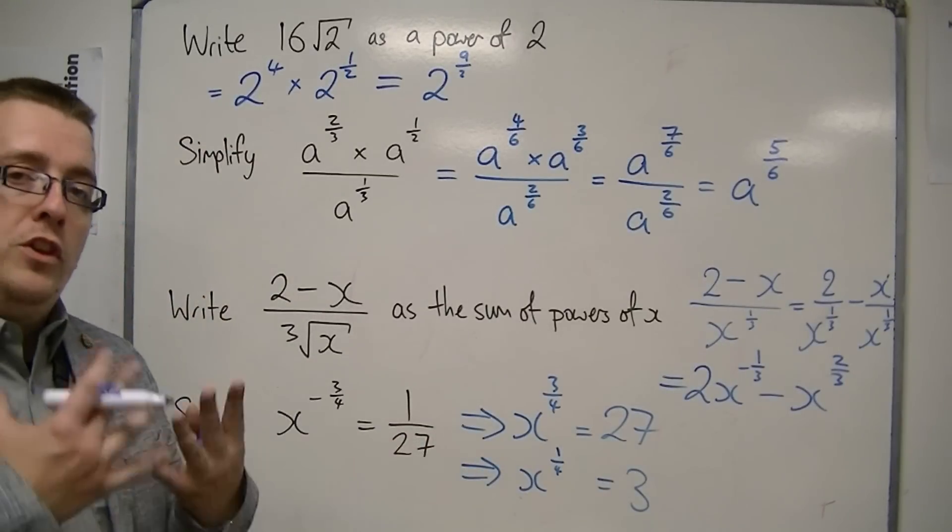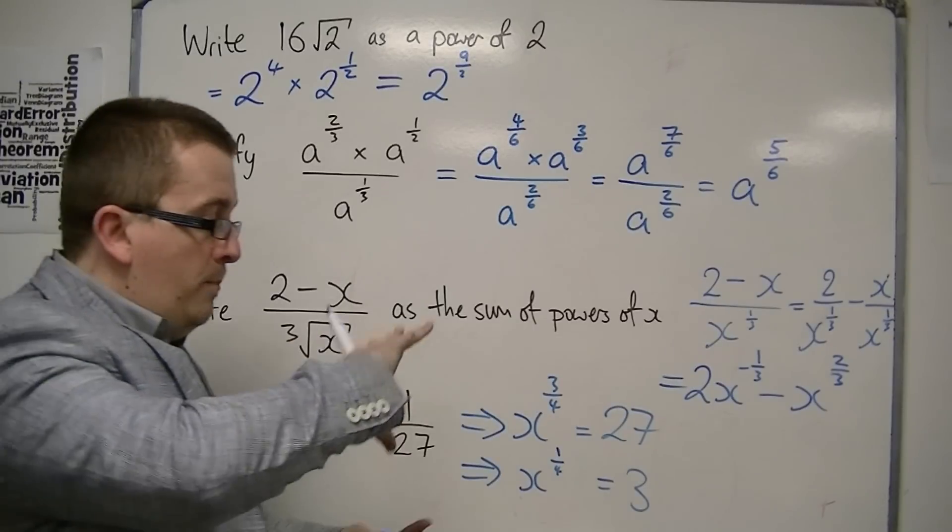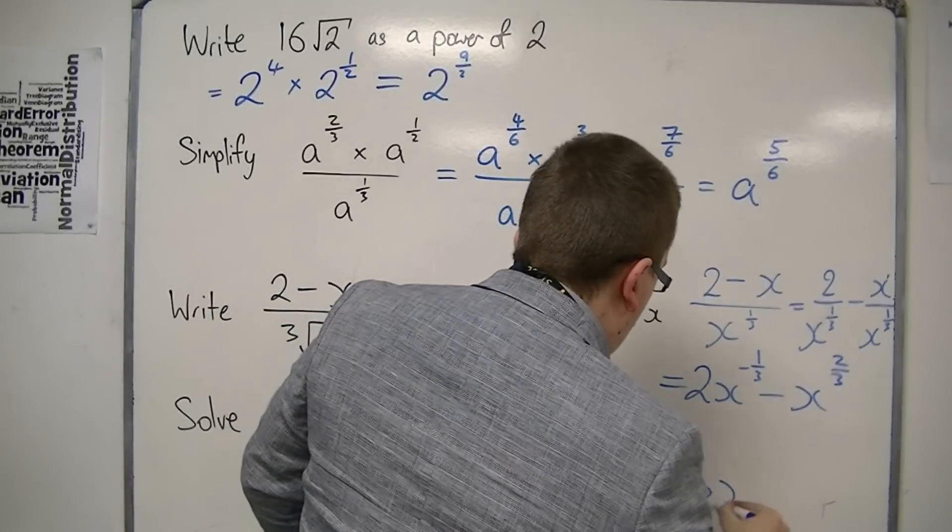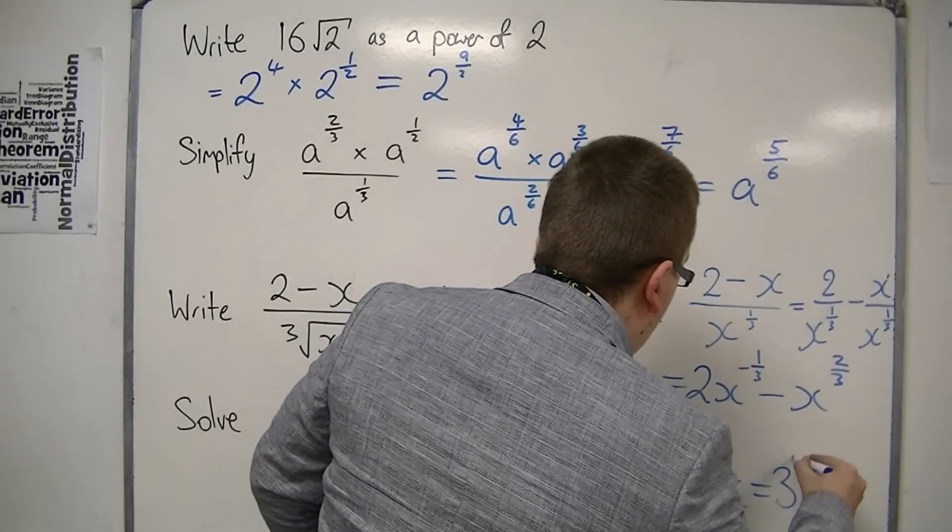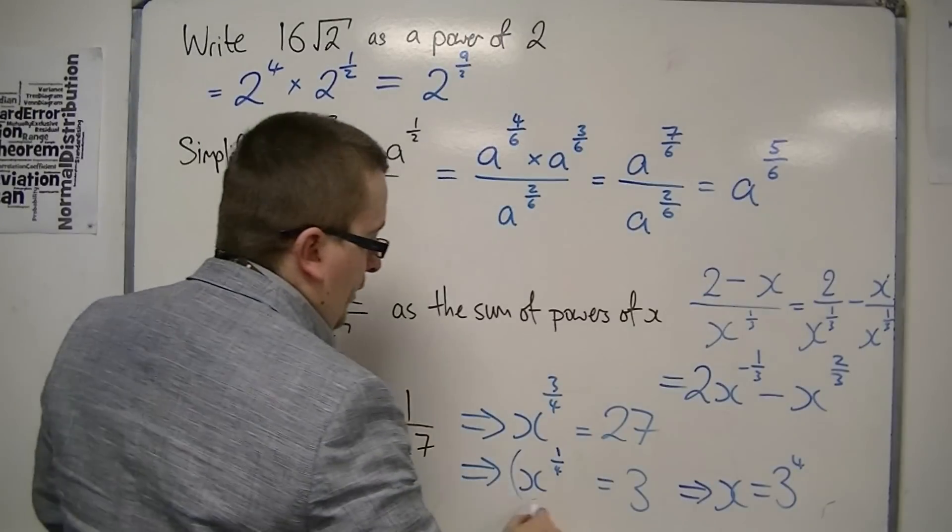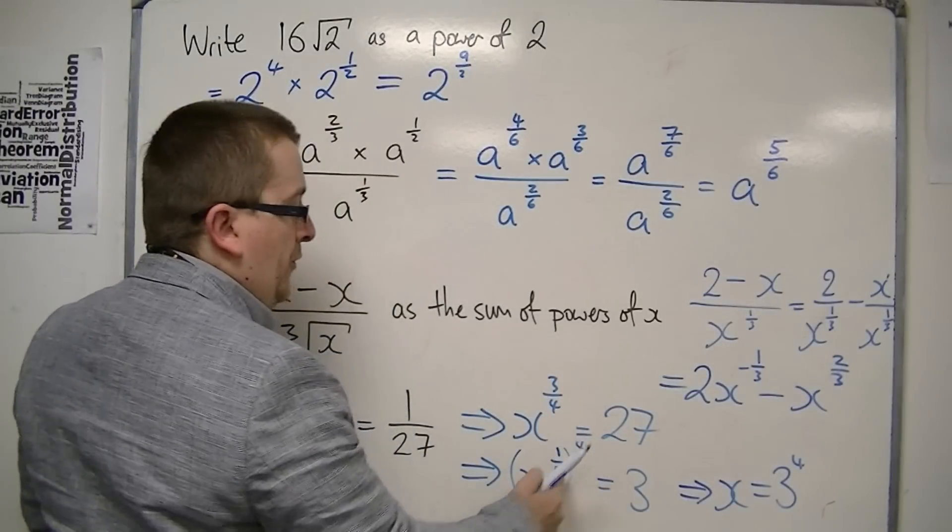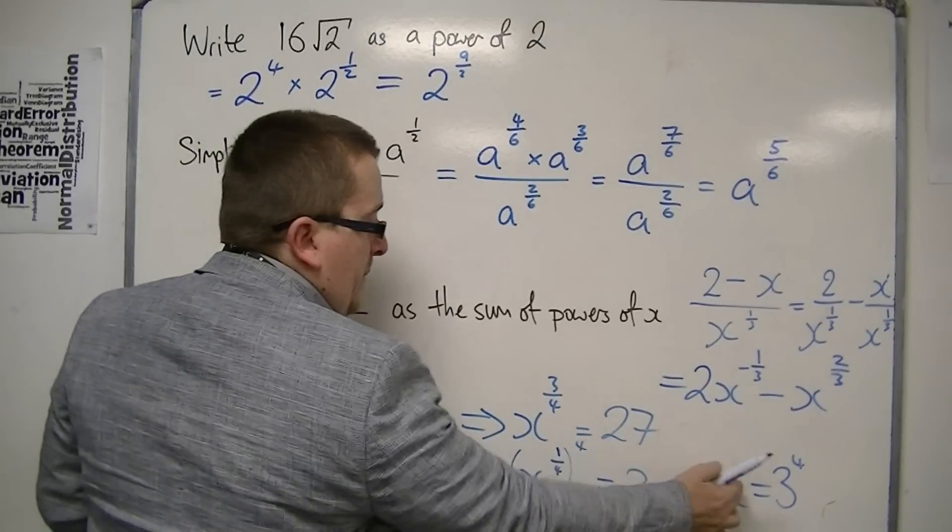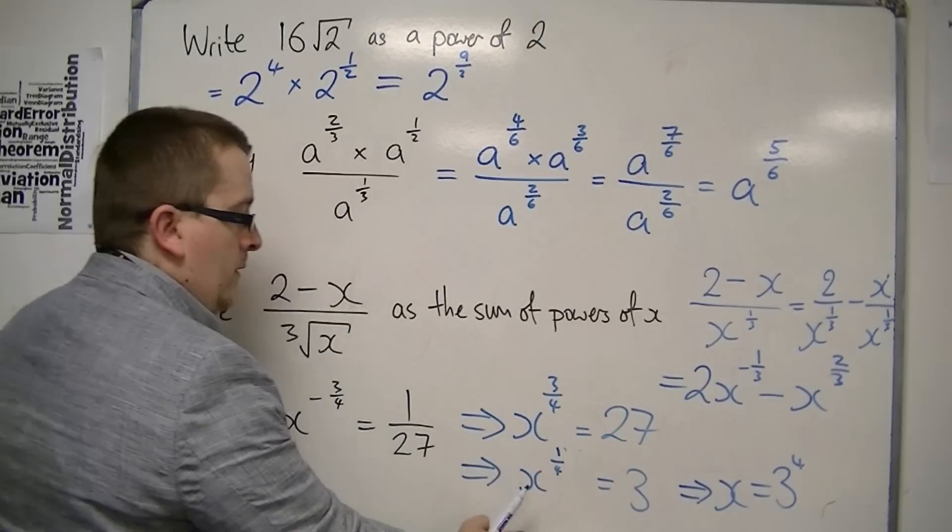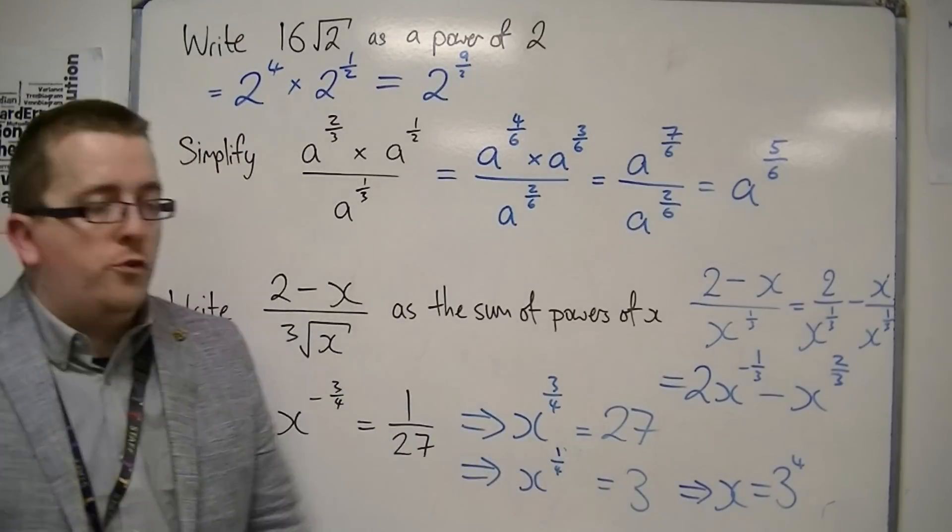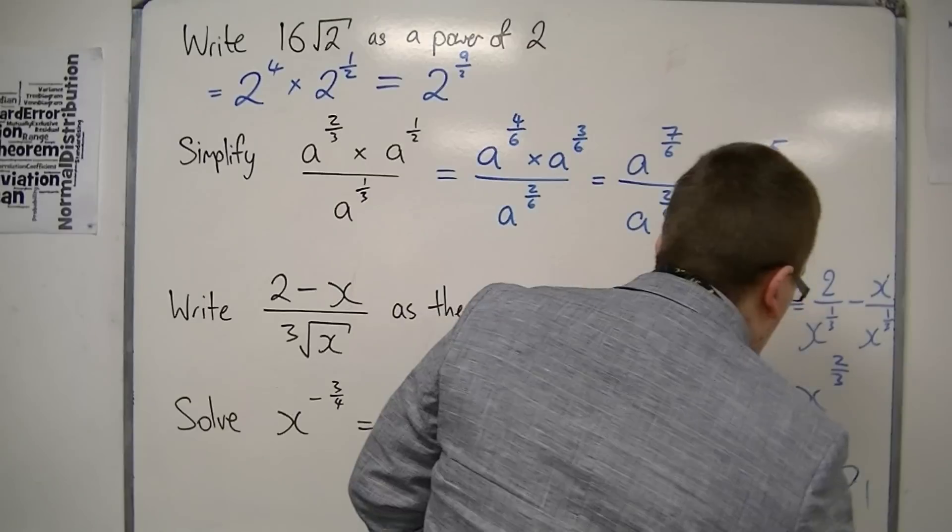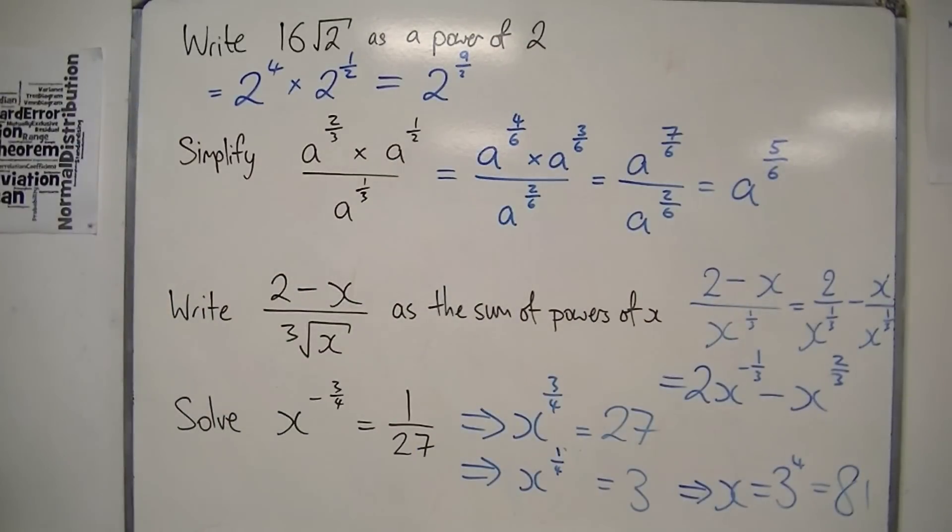Now, to get rid of the 1/4, I've got to put both sides to the power of 4. So, this is x is equal to 3 to the 4. Because if I put the left-hand side to the power of 4, then 1/4 times 4 is just 1, which gets me the x to the 1 that I want. So, x is equal to 3 to the 4, which is 81. So, 81 is the answer that we're looking for.